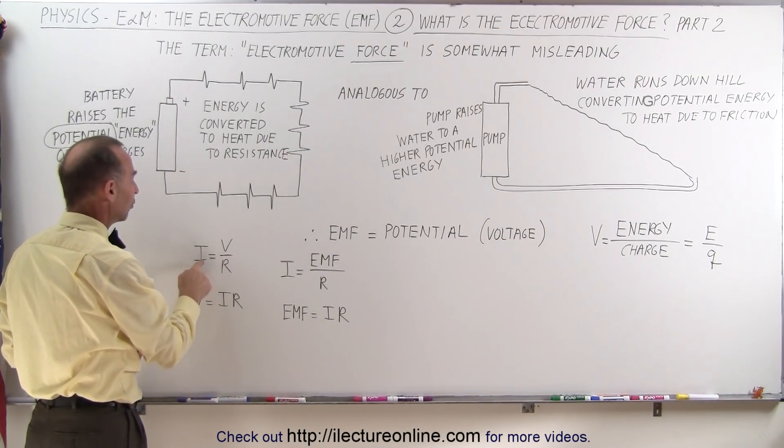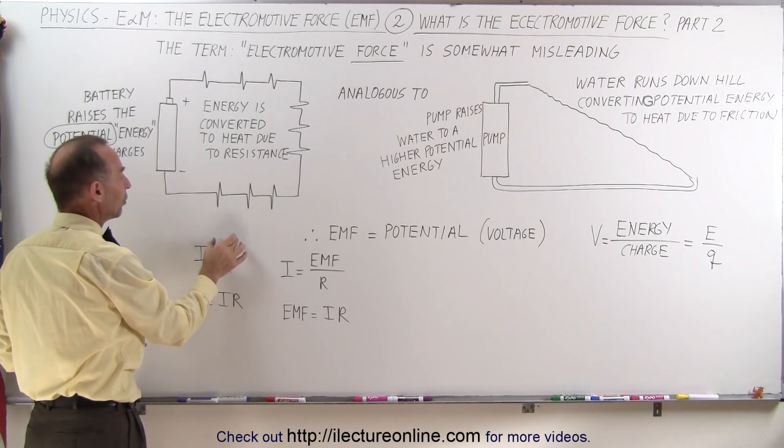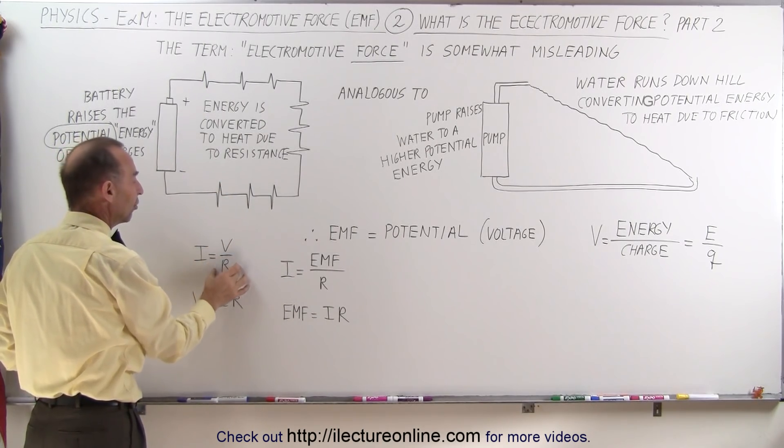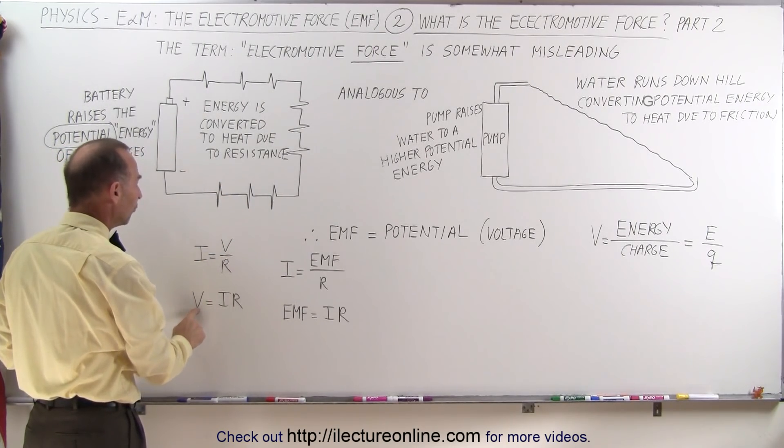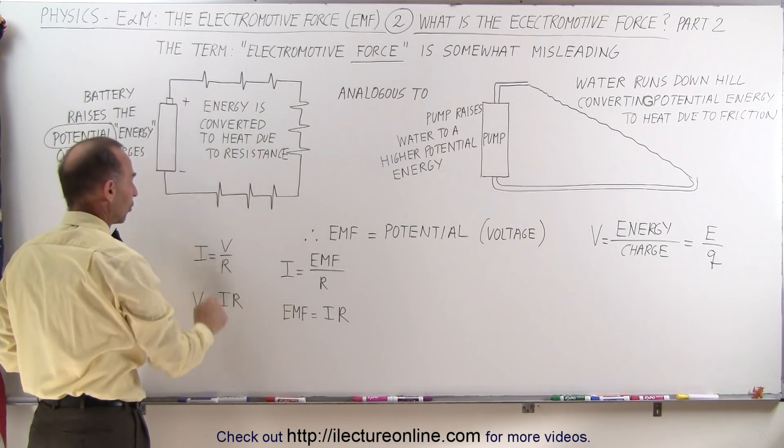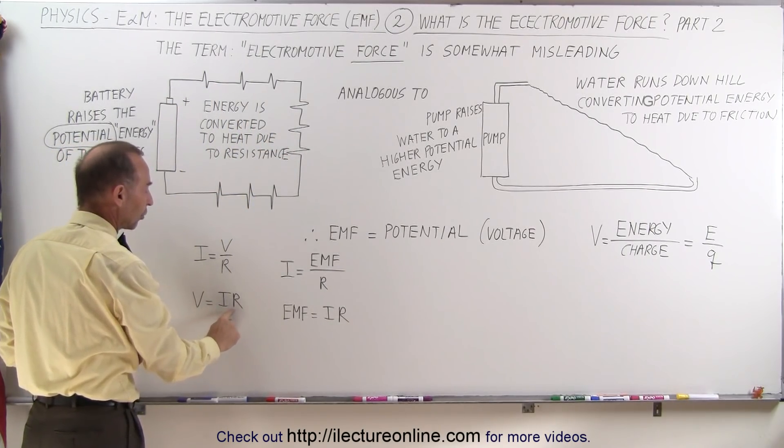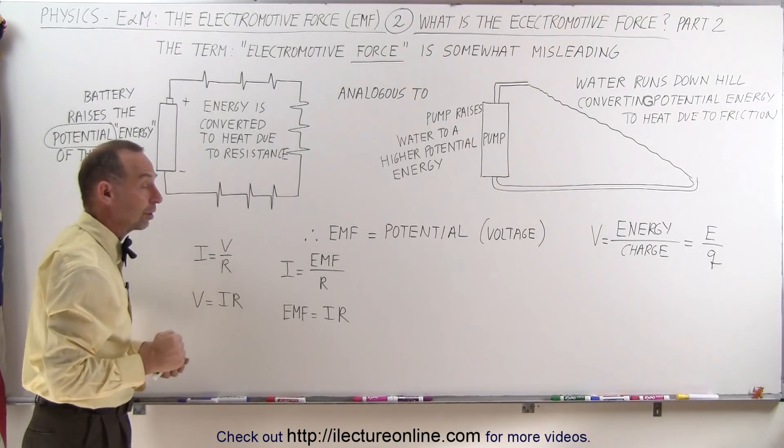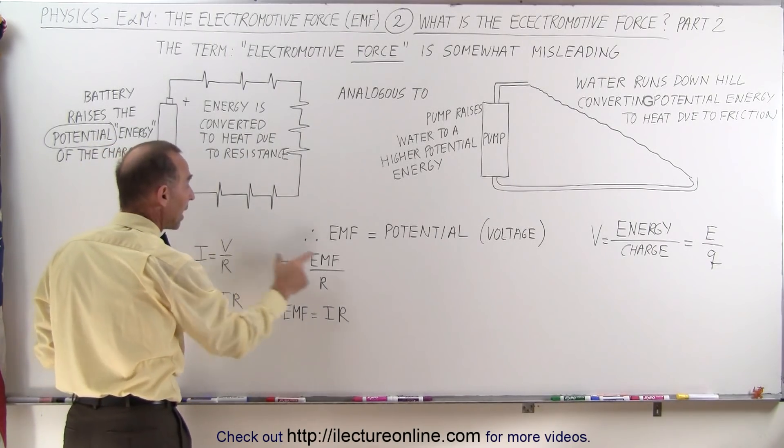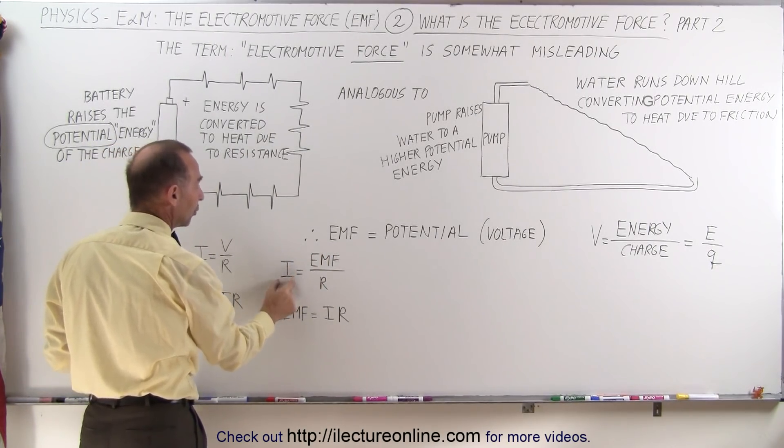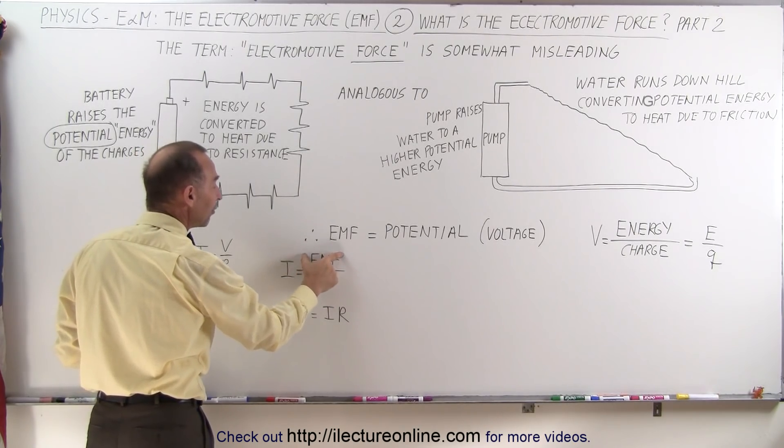Using Ohm's law, the current through a circuit is equal to the potential V divided by the resistance of the circuit, or the voltage drop through the circuit equals the current times the resistance. We can replace voltage with EMF and say that the current is equal to the EMF of the circuit divided by R.